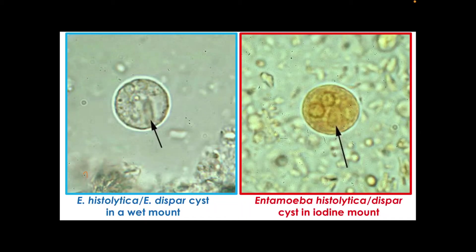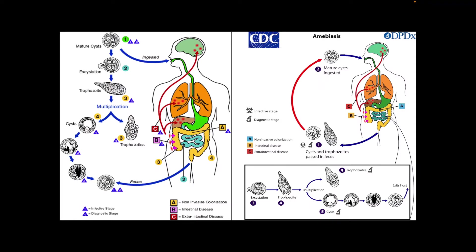This compares saline mount preparation and iodine mount preparation. In the saline mount, the chromatoidal bar is distinct — sausage or cigar-shaped — and we can see the nuclei with the karyosome at the center. In the iodine mount, it is more distinct because it is stained, and what is really clear is the central location of the karyosome.